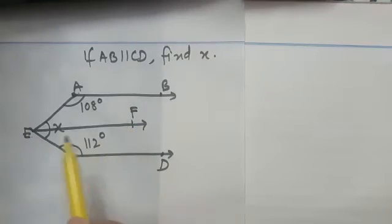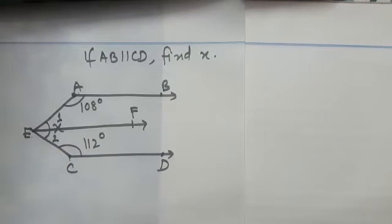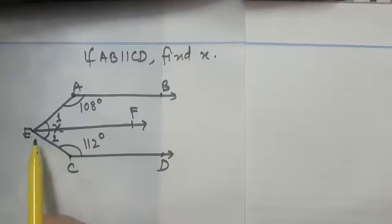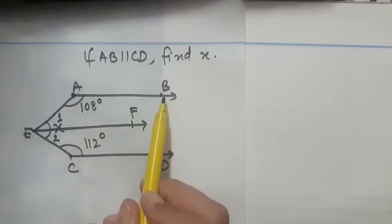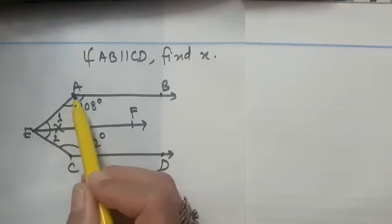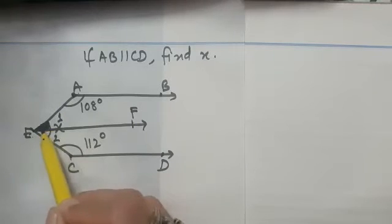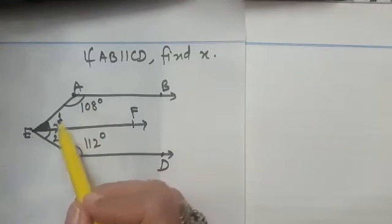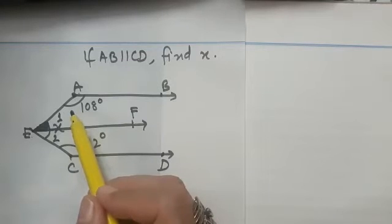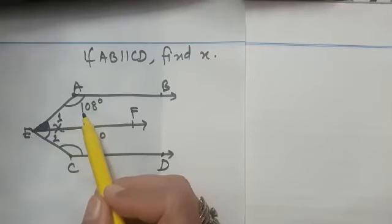Let us mark angle AEF as angle 1 and angle CEF as angle 2. Our objective is to find angle 1 and angle 2. Since EF is parallel to AB and AE is a transversal, angle 1 and 108 degrees make a pair of co-interior angles. We know that co-interior angles are supplementary, so we can find angle 1.